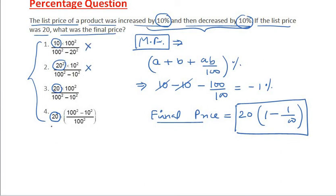So third and fourth option. If you look at that, let's check option 4. This is 20 times, now look at it, 100 square by 100 square is nothing but 1, right? Now this is 10 square by 100 square, and that is nothing but 100/10,000, which is 1/100.